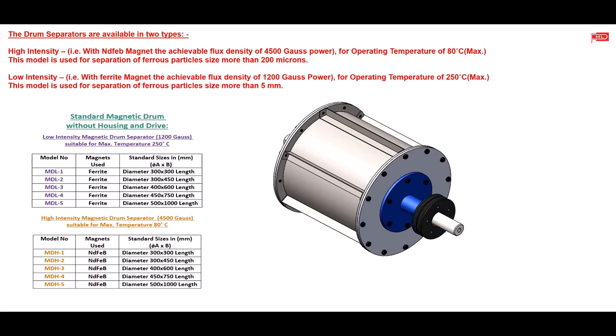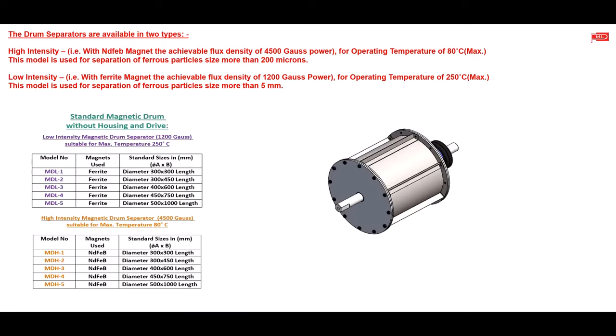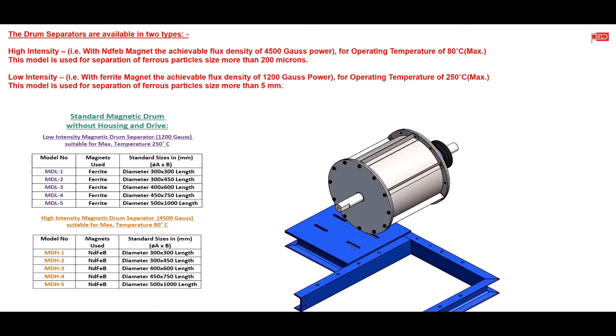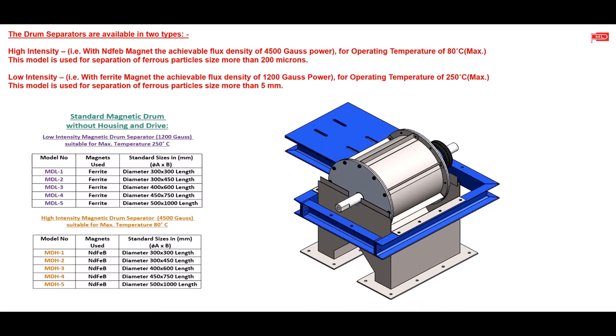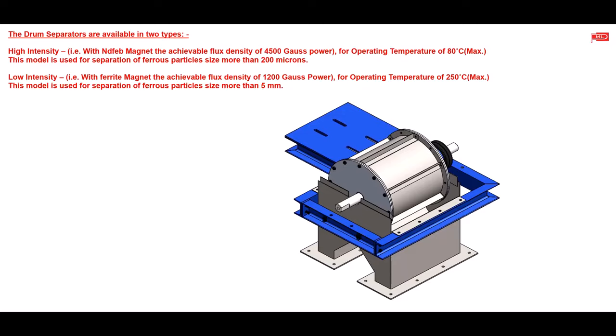The drum separators are also available in two types. High-intensity, i.e. with NDFEB magnet, the achievable flux density of 4500 Gauss power for operating temperature of 80 degrees Celsius. This model is used for separation of ferrous particles size more than 200 microns.